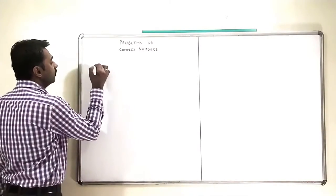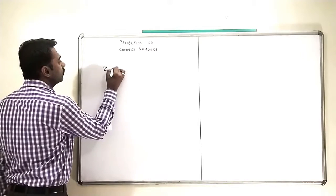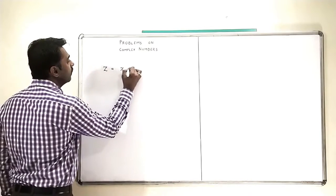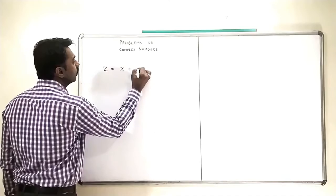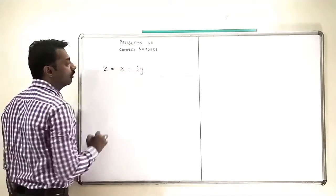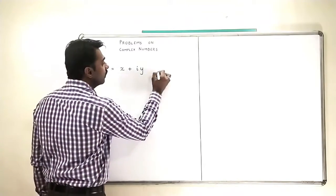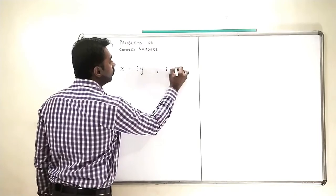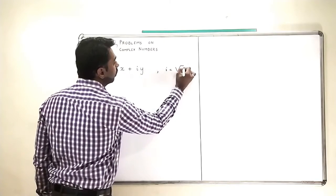So let me just recall Z, which is a complex number, can be written in the form of X plus iY, where this i is the square root of minus 1.